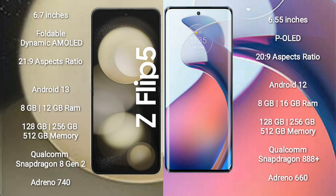The Motorola Moto S30 Pro comes with 8GB or 12GB RAM, and 128GB, 256GB, or 512GB internal storage. It features a Qualcomm Snapdragon 888 processor and GPU Adreno.